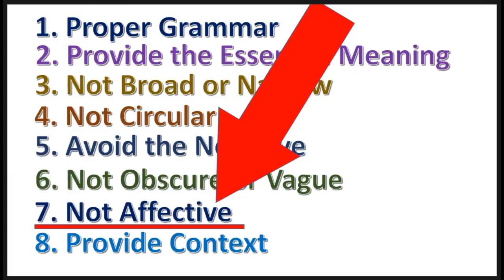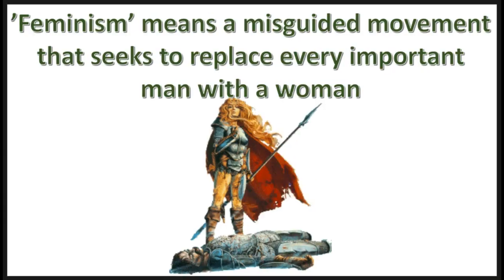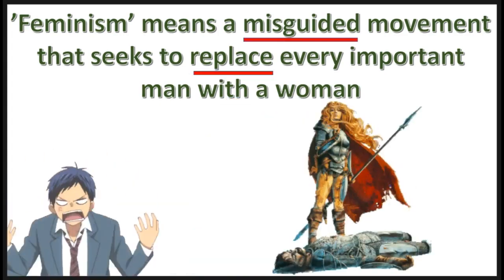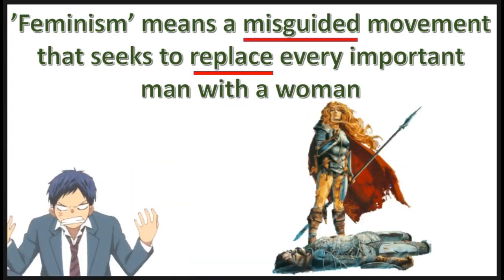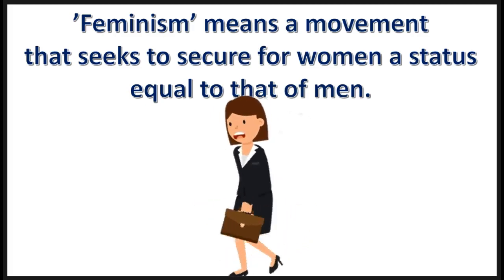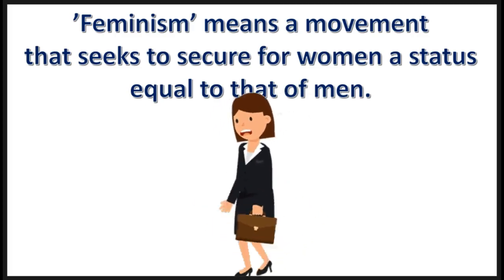Rule seven: a lexical definition should not be affective. Here's an example of an affective definition. Notice the definition plays upon the emotions. It should be this way — this definition is better.